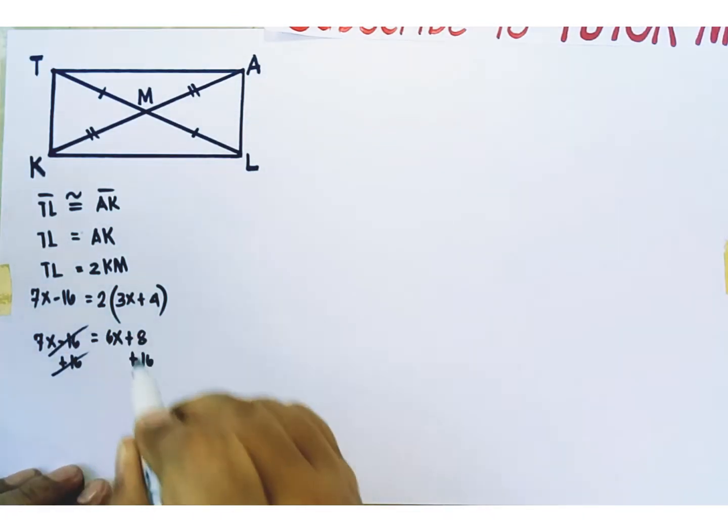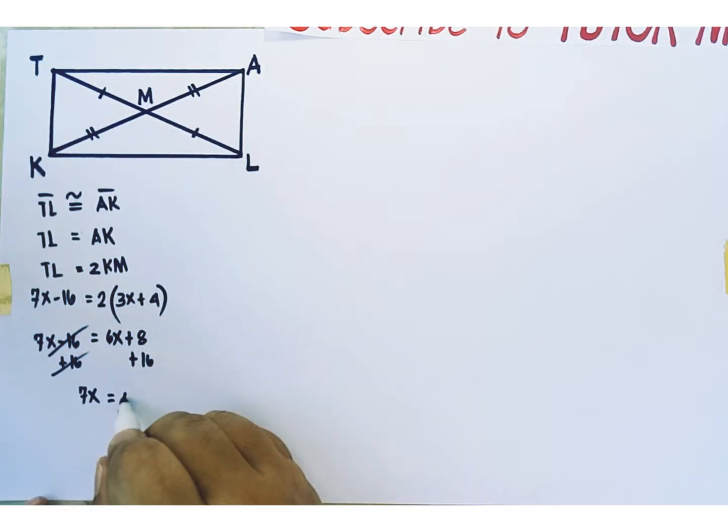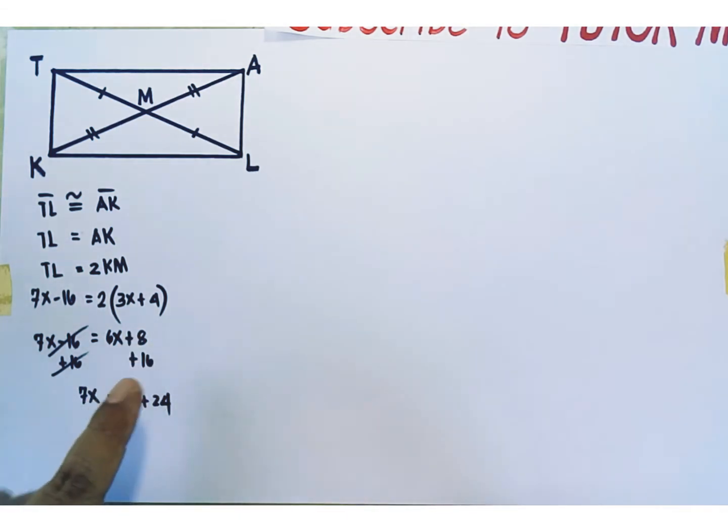Additive inverses cancel out each other on the left side of the equation. The left side becomes 7x only. Simplify right side. 6x plus 24. Combine 8 and 16. 8 plus 16 is equal to 24.